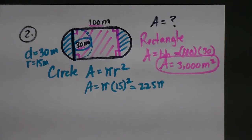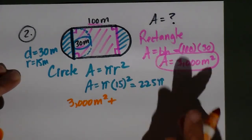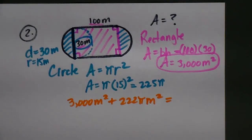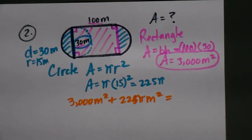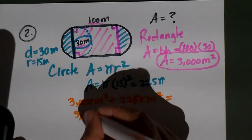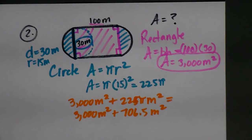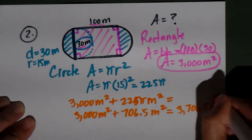The total area for this figure is 3,000 square meters plus 225 pi square meters. Multiplying 225 pi out gives approximately 706.5 square meters. Adding those together gives a total composite area of approximately 3,706.5 square meters — and that is the final answer.